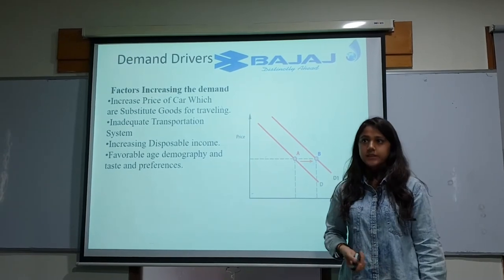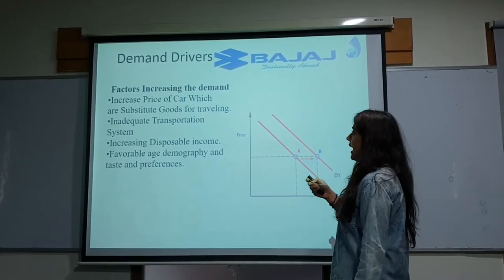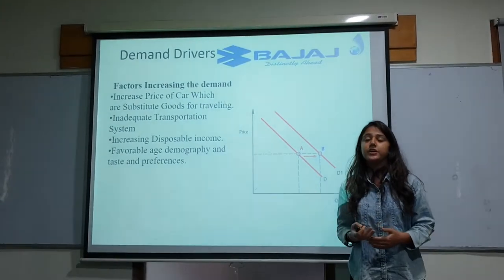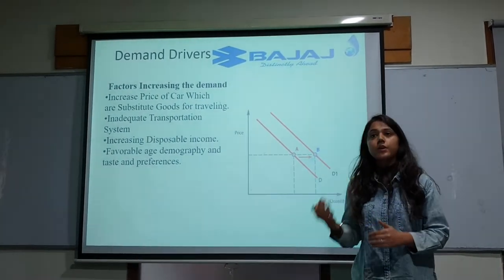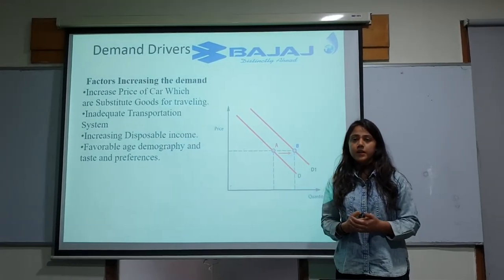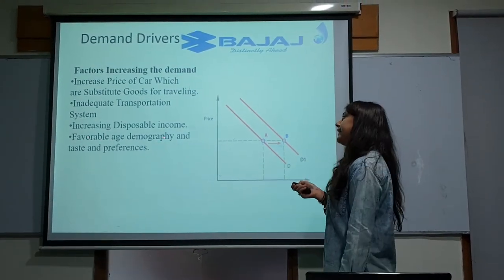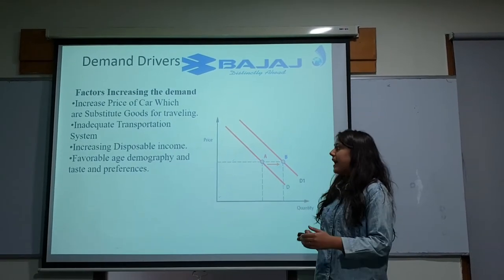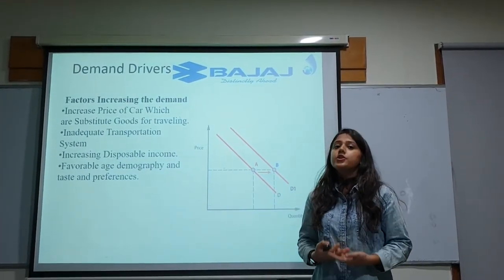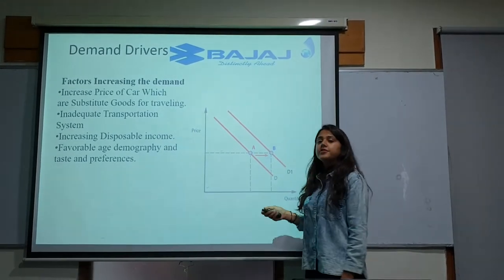The demand drivers — factors increasing demand — are: first, increase in the price of cars which are substitute goods for travelling. Second, an inadequate transportation system which leads consumers to buy their own vehicles as a more convenient option. Third, increasing disposable income as per capita income rises, making it easier for consumers to buy automobiles. Fourth, favourable age demography and changing tastes and preferences, as younger consumers are more inclined to buy two-wheelers. These factors cause a rightward shift of the demand curve from D to D1.